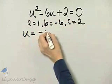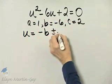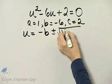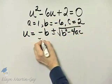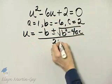u is minus b plus or minus the square root of b squared minus 4ac all over 2a.